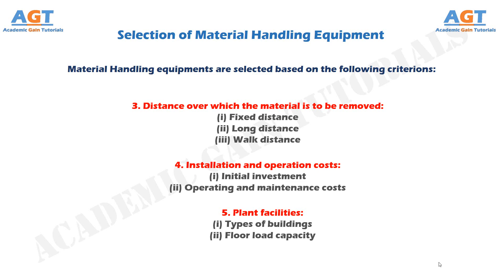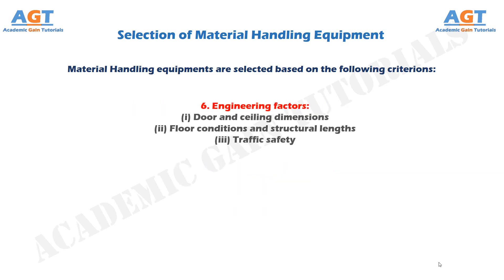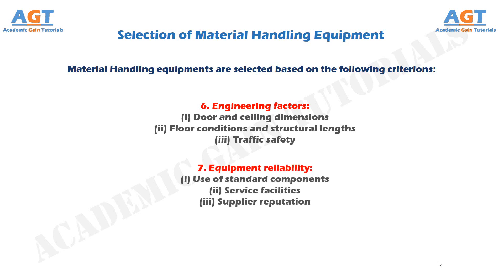Number 6: Engineering factors. This includes door and ceiling dimensions, floor conditions and structural lengths, and traffic safety.